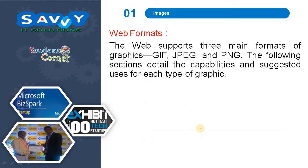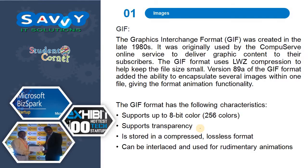Images and web formats. The web supports 3 main formats of graphics: GIF, JPEG and PNG. The following sections detail the capabilities and suggested uses for each type of graphics.